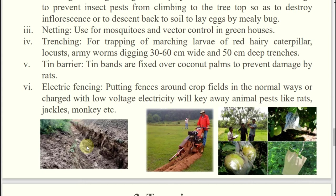Tin barrier — suppose a storage godown has a veranda of about 1.5 meters height given. If that surface is rough, rats can crawl and climb. But if it is very smooth — like a plaster or a steam-polished surface — they cannot crawl up and will slide back. So this tin barrier can be used in case of coconut palm trees so that rats cannot climb up.